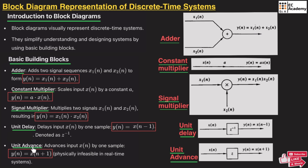Next is unit advance, which advances the input signal by one unit. For example, if the input is x(n), the output will be y(n) = x(n+1), where the plus sign represents advance. This is represented by z (i.e., z to the power of 1) in the block diagram. Using these blocks, we can represent discrete time signals in a block diagram.